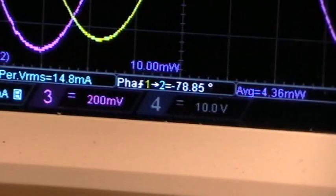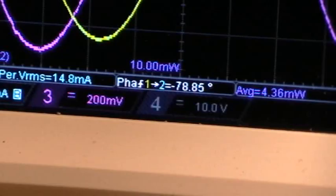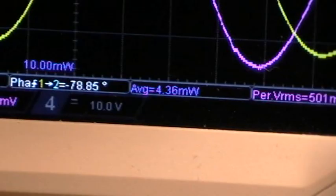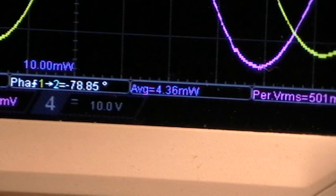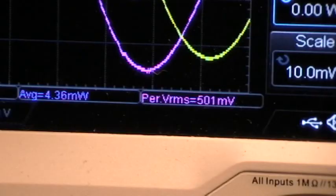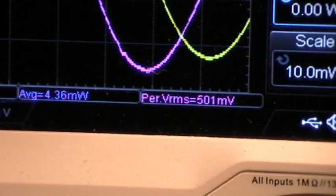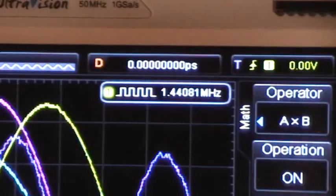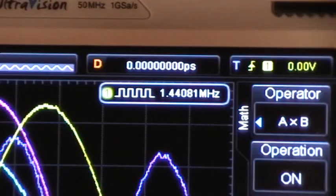Phase angle between voltage and current is minus 78.85, which means that the current is leading the voltage here. The average power calculated input power calculated by the scope using instantaneous multiplication of CH1, channel 1 and channel 2, is 4.36 milliwatts. And the output voltage across the 19.8 ohm load is 501 millivolts RMS for one period of the 14.44 megahertz signal.